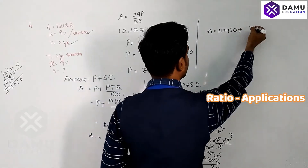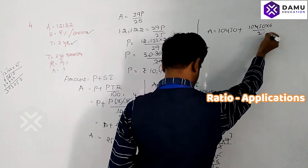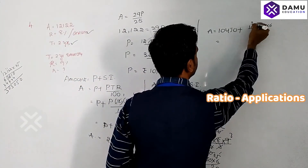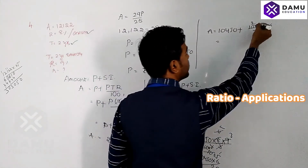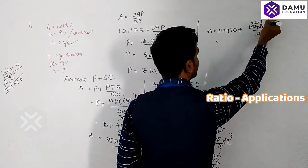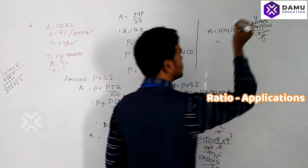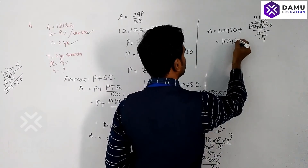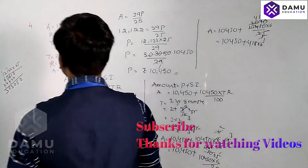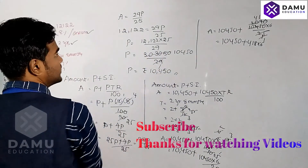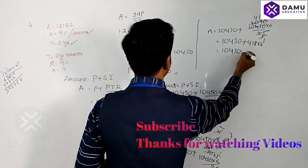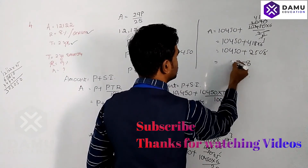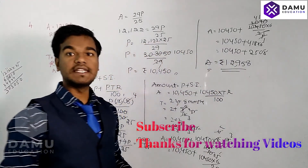Amount = 10,450 + 10,450 × 6/25. Calculating 10,450 × 6/25: 10,450 divided by 25 is 418, and 418 × 6 = 2,508. So Amount = 10,450 + 2,508 = 12,958 rupees. The final amount is 12,958 rupees.